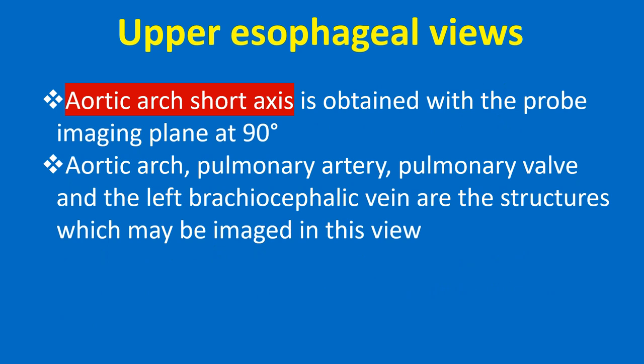The aortic arch short axis is obtained with the probe imaging plane at 90 degrees. The aortic arch, pulmonary artery, pulmonary valve, and the left brachiocephalic vein are the structures which may be imaged in this view.